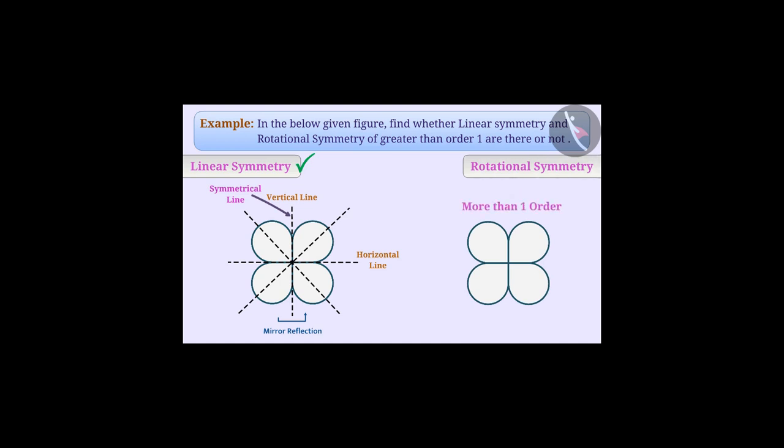Here we see that if we rotate the figure at an angle of 90 degrees around the centre, we get the figure exactly matching the initial shape. Similarly, if we rotate at angles of 180 degrees, 270 degrees and 360 degrees, we also get a shape matching the initial shape. In this way, there are 4 positions in an entire circle when the shape looks the same as before.